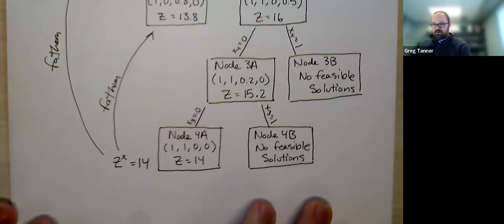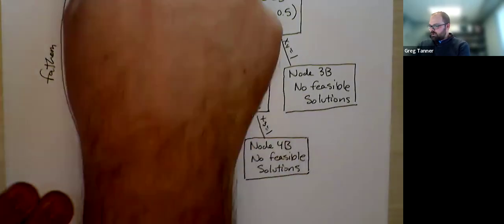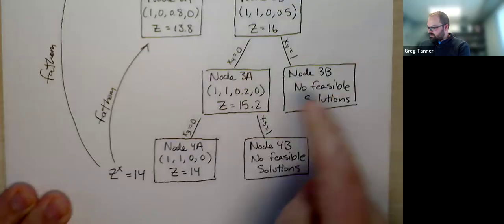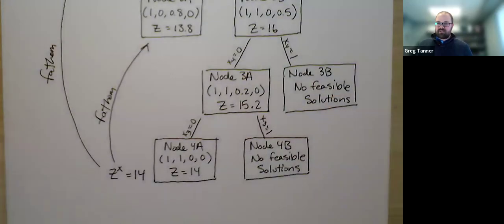And our branch and bound algorithm had to solve 1, 2, 3, 4, 5, 6, 7, 8, 9 linear programs along the way. But note, they each sort of build off each other. And so a smart implementation of branch and bound would do this more efficiently than solving nine separate problems.